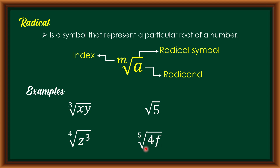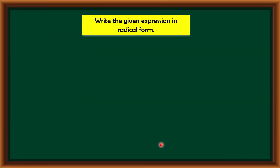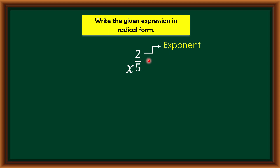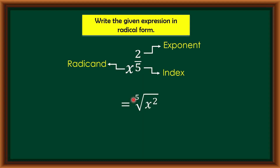Another example: the fifth root of 4f. Now let us write a given expression in radical form. I have an expression written in exponential form: x raised to 2 over 5. To write it into radical form, remember that the numerator of the exponent will be the exponent of the radicand, while the denominator will be the index of our radical, and x (the base) will be the radicand. So x raised to 2 over 5 equals the 5th root of x squared. The numerator 2 becomes the exponent of the radicand, and the denominator 5 becomes the root.